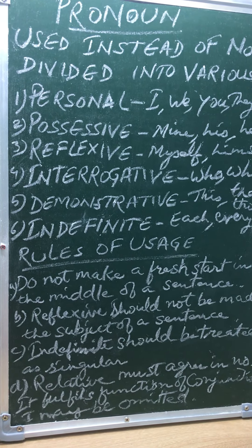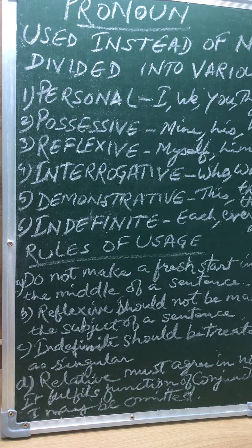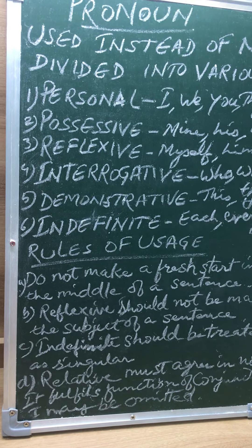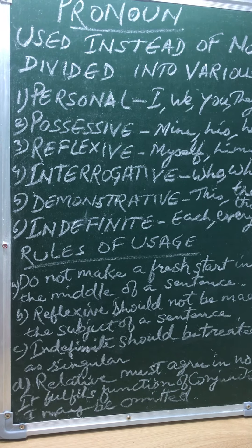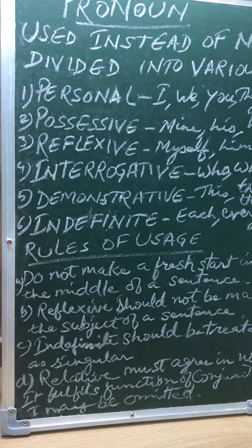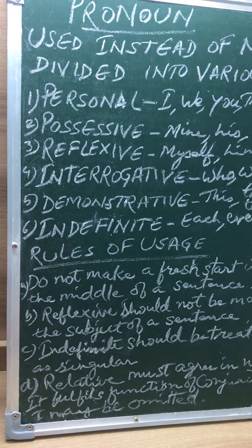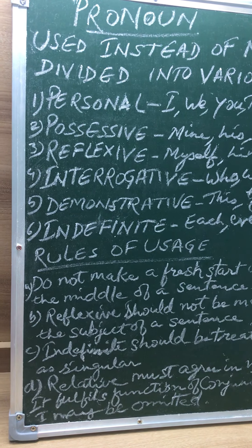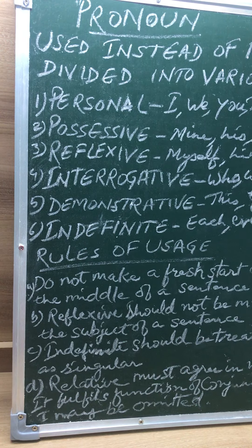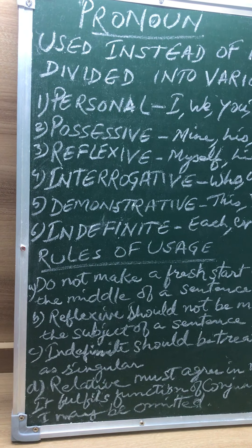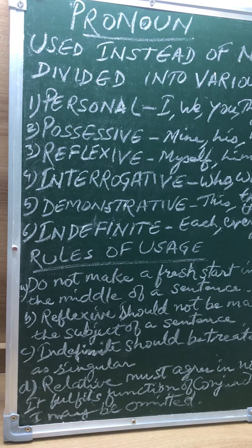Pronouns following the verb 'to be' are also in the objective case. The wrong example is: 'It is him that has broken the window pane.' Instead of 'him', we write: it is he that has broken the window pane.